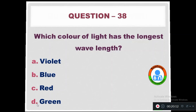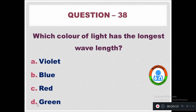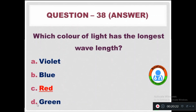Question 38: Which color of light has the longest wavelength? Option A: Violet. Option B: Blue. Option C: Red. Option D: Green. The longest wavelength belongs to red color.